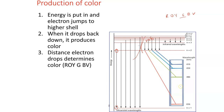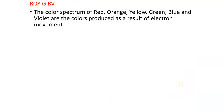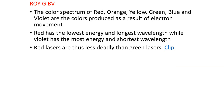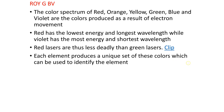When the electron drops back down, it produces color, and the distance the electron drops determines the color. The ROY G BIV color spectrum — red, orange, yellow, green, blue, and violet — are the colors produced as a result of electron movement. Red has the lowest energy and the longest wavelength; violet has the highest energy and the shortest wavelength. This is why red lasers are less dangerous than green lasers. When doctors do eye surgery, they use more energetic colors like blue and violet because those require higher energy to cut tissue. Each element produces a unique set of colors which can be used to identify it — that's the emission spectrum.